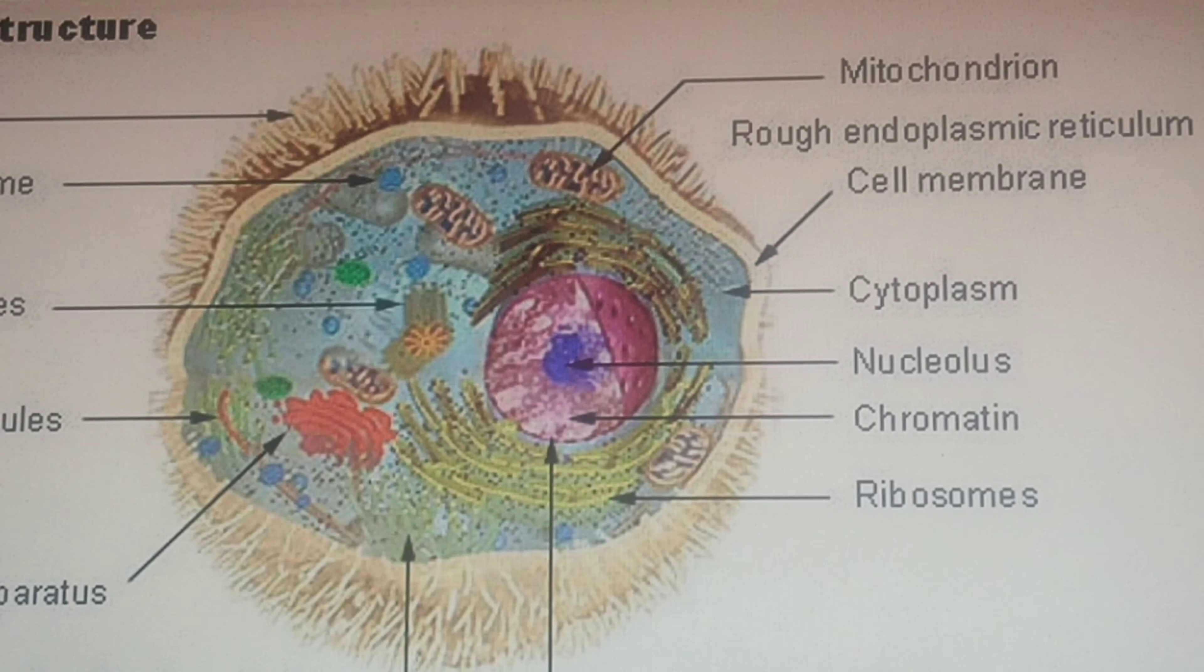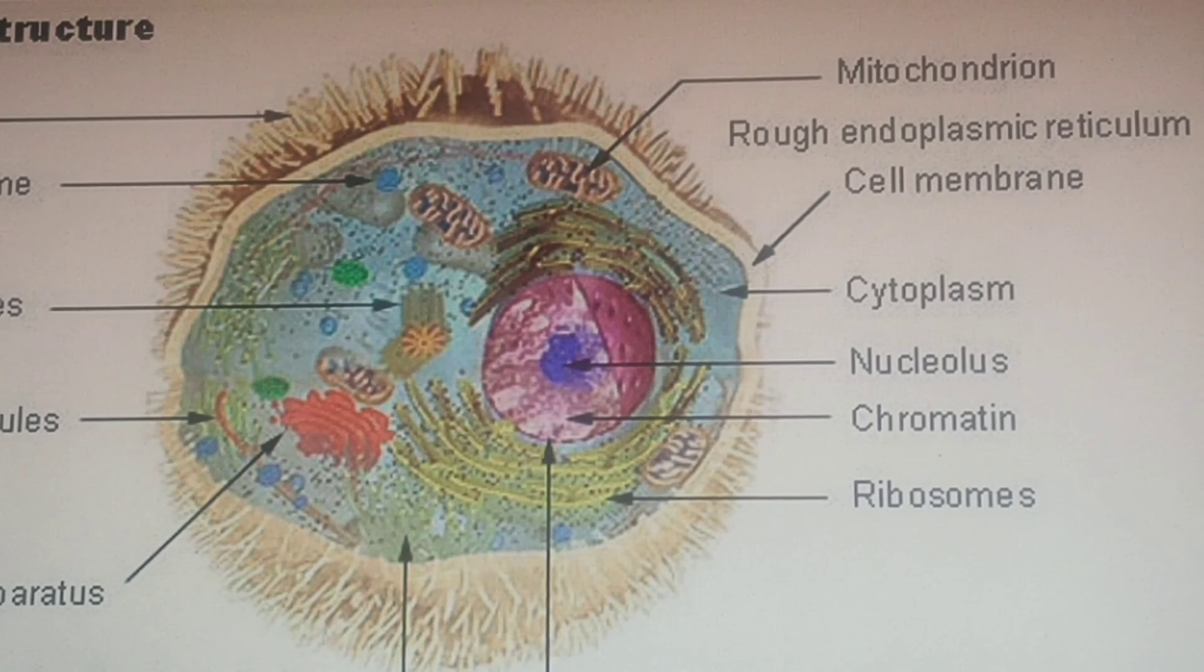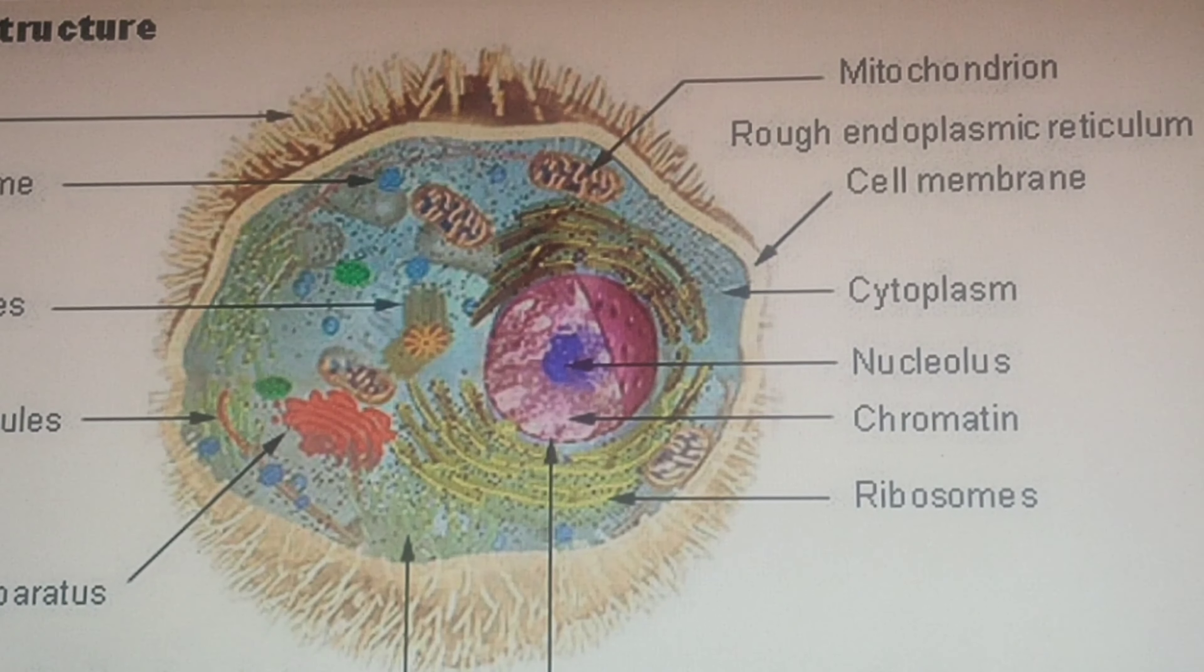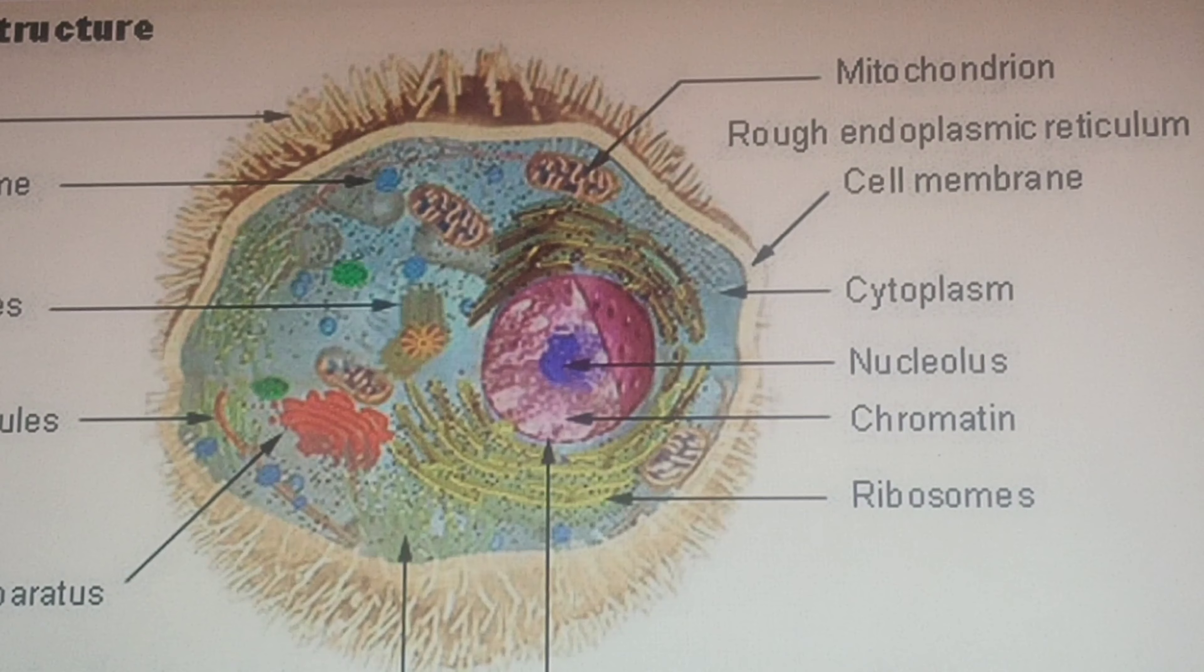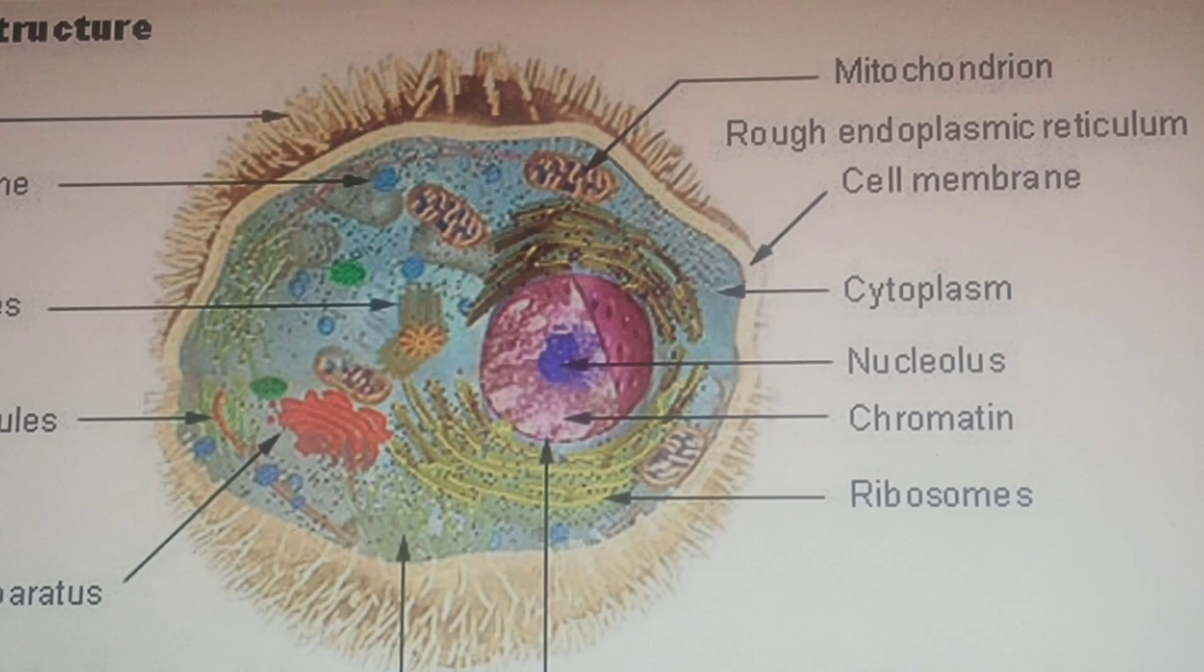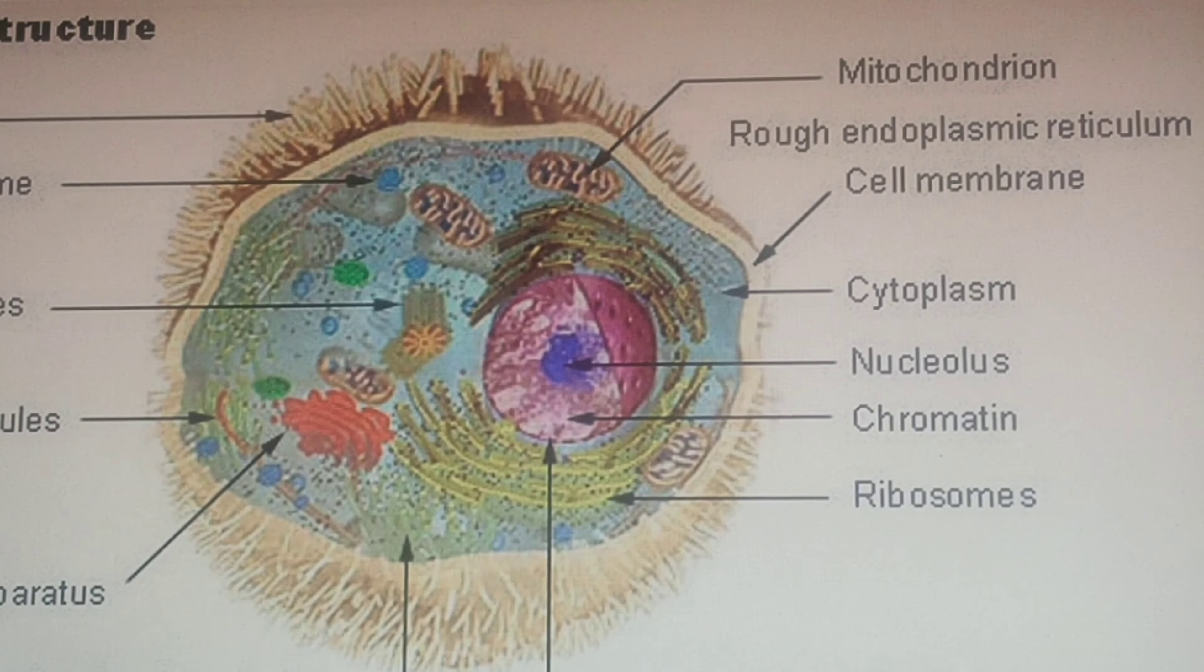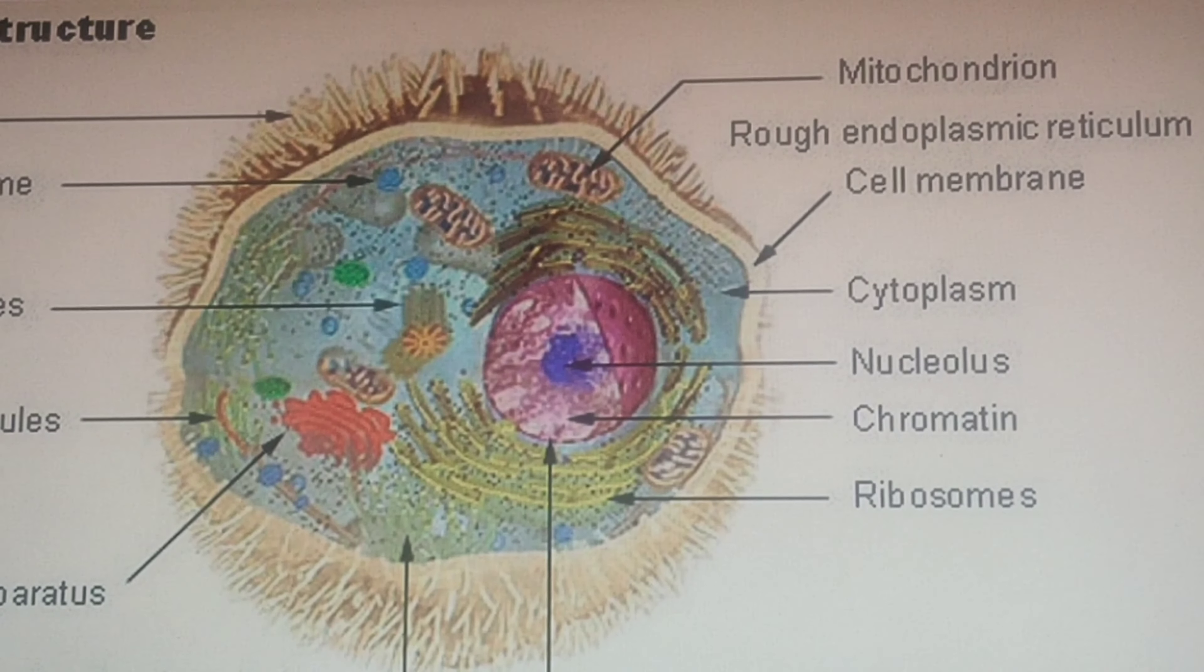But the white blood cells, that increases, that is our immunity power, you know. When viruses or bacteria enters a body, for example, don't take it serious, for example, if we get coronavirus, if that coronavirus comes inside us, these are the blood cells which fight with the virus.